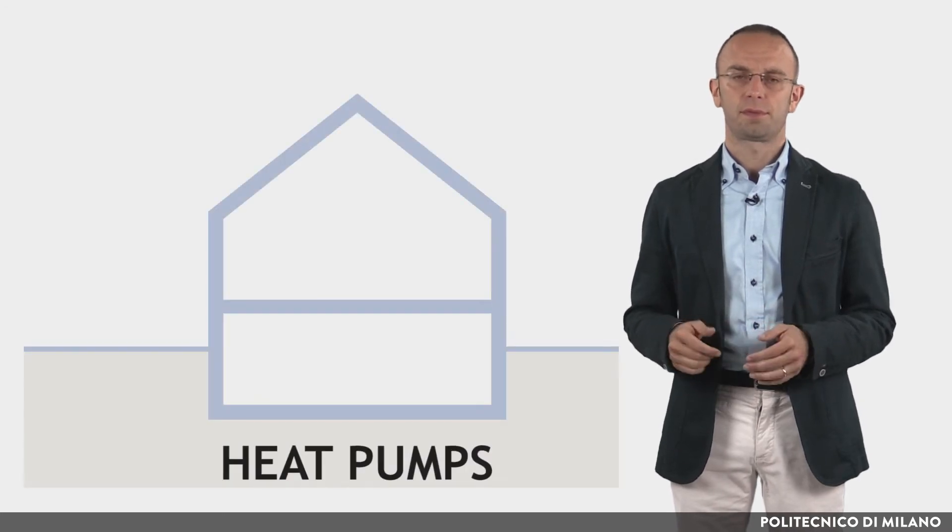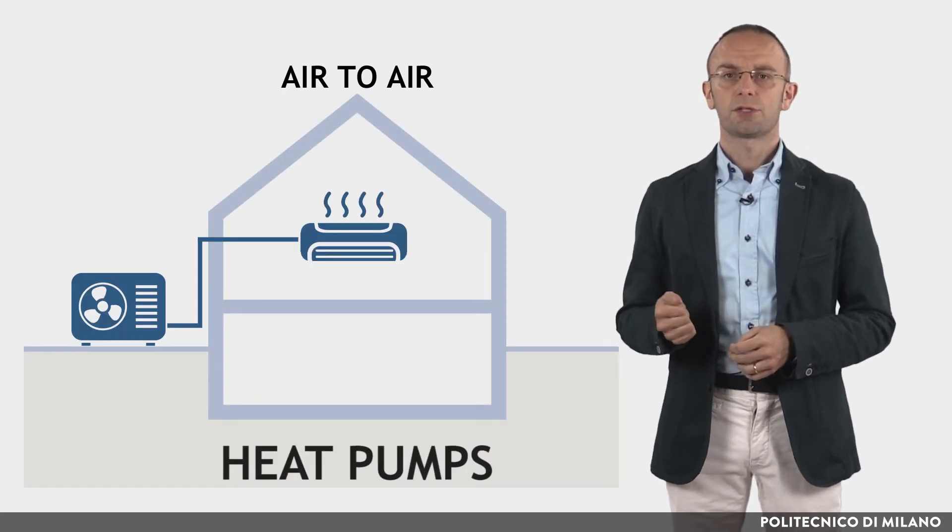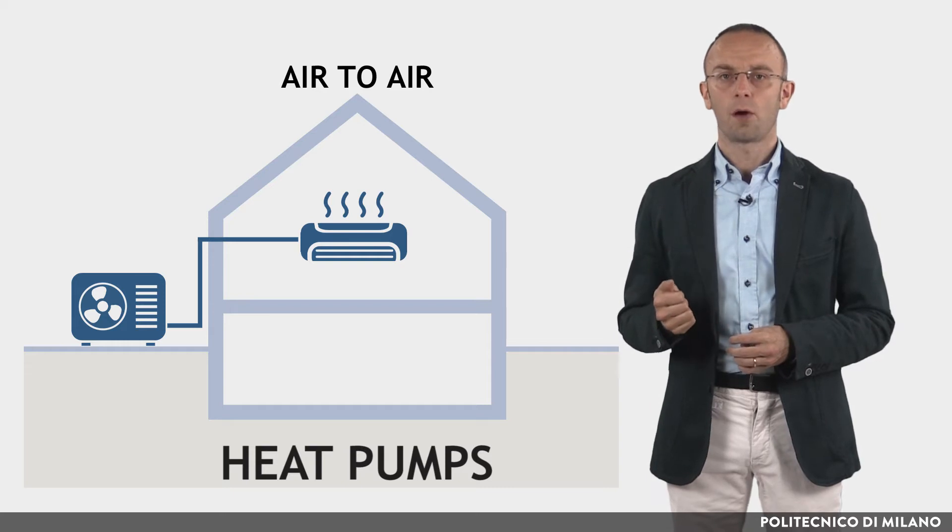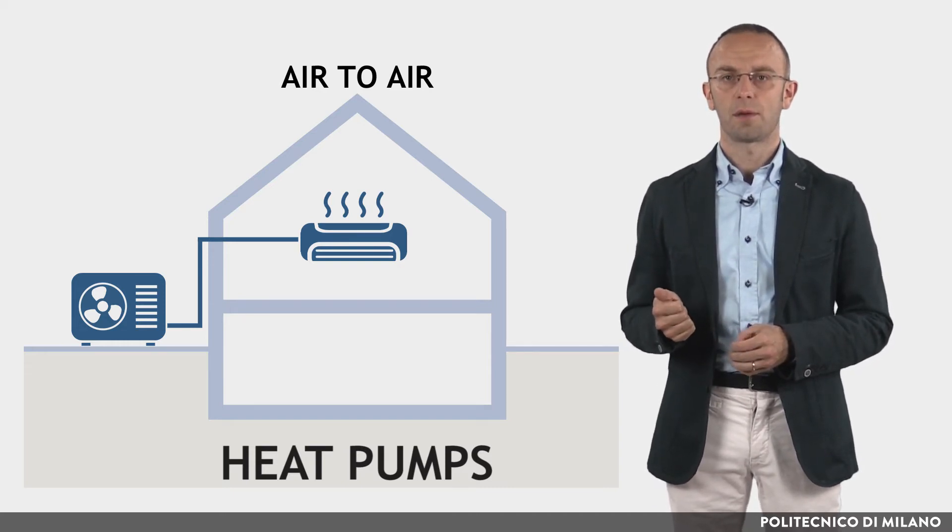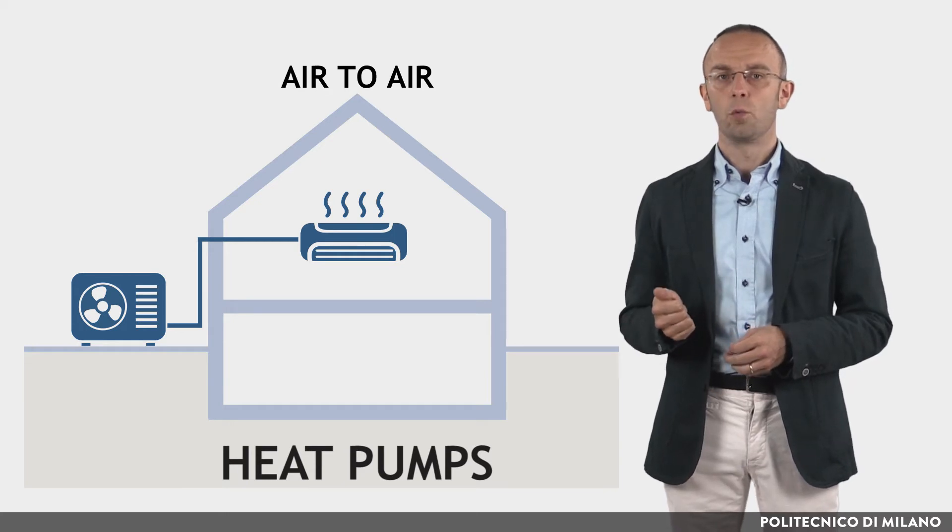In general, depending on the fluid used to condense the refrigerant, which is the fluid to which the heat is transferred, and also the fluid cooled by the internal evaporator coil, there may be four types of heat pumps. Air-to-air: the refrigeration machine directly cools the room air through an evaporator and transfers heat to the external environment by means of an air-cooled condenser.